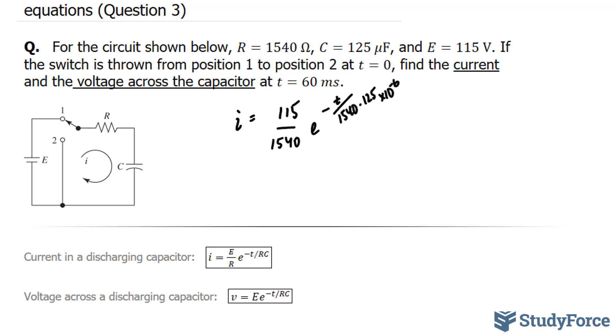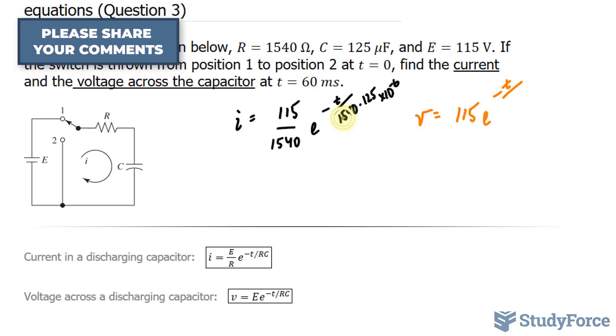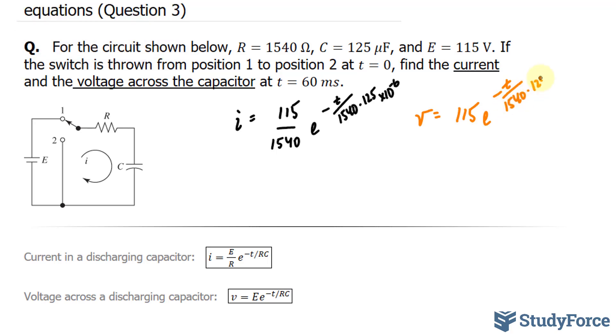Now for the voltage. We have V is equal to our power source of 115 volts, times E to the power of negative T over this exact statement, 1540 times 125 times 10 to the power of negative 6.